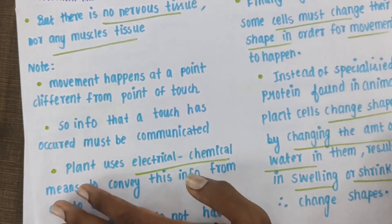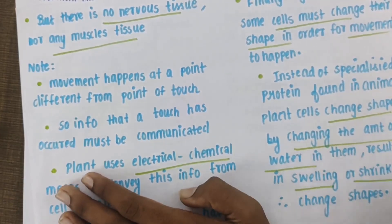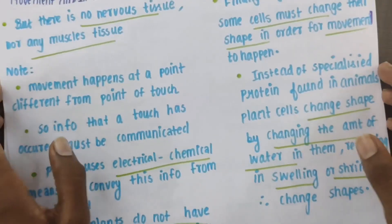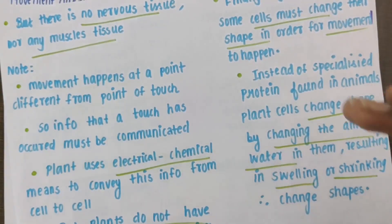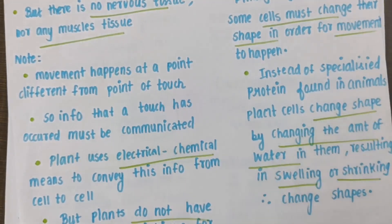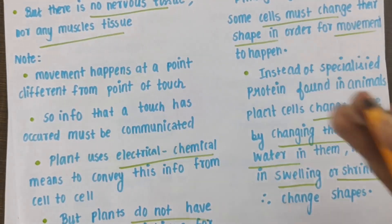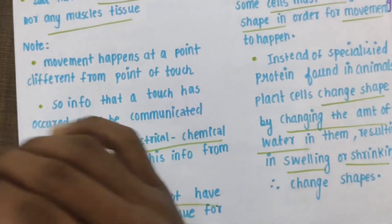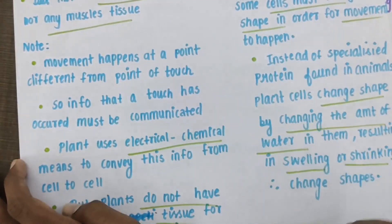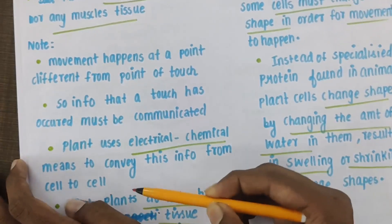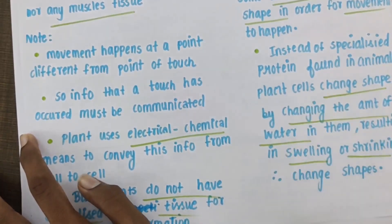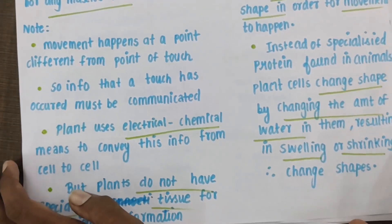So how do we get this movement in plants? This concept will be a little lengthy because I want you to know all the concepts. Movement happens at a point different from the point of touch. In plants, information is transmitted by electrical and chemical means.